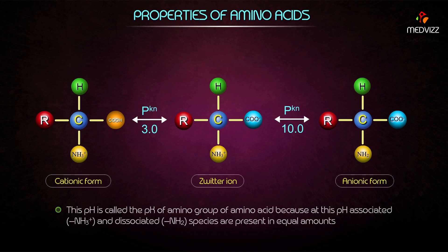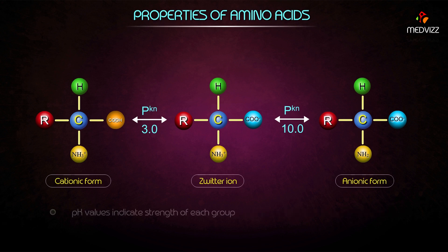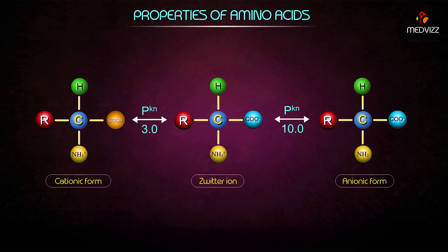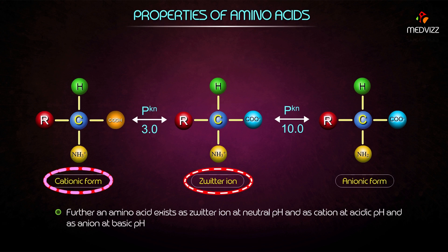Therefore, an amino acid has two pK values corresponding to its two ionizable groups. The pK values indicate the strength of each group. An amino acid exists as a zwitterion at neutral pH, as a cation at acidic pH, and as an anion at basic pH.